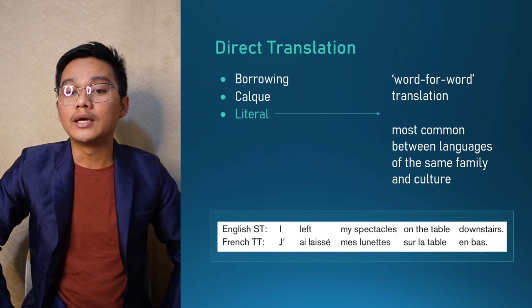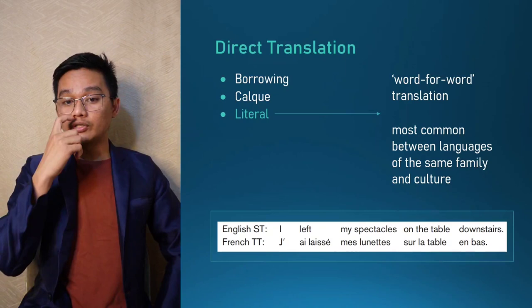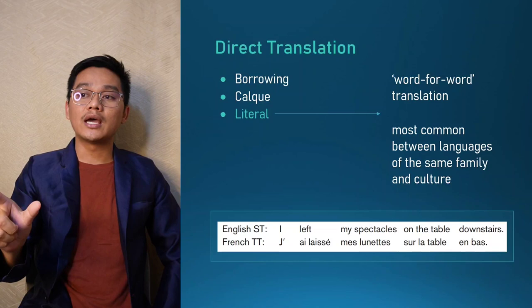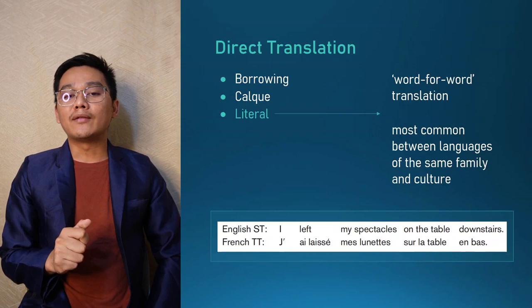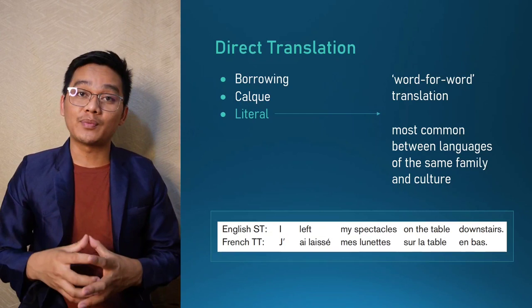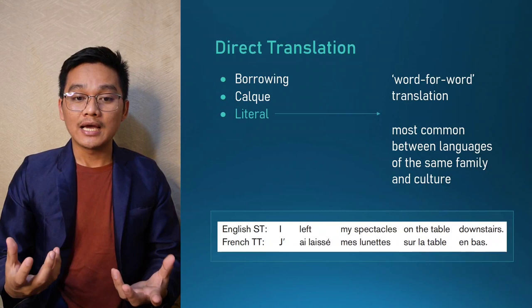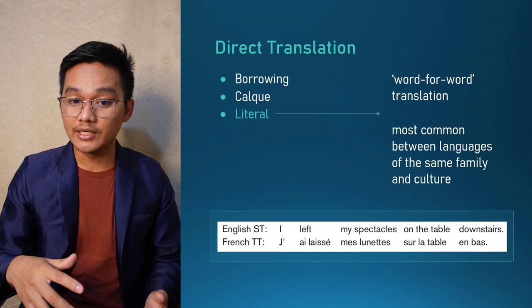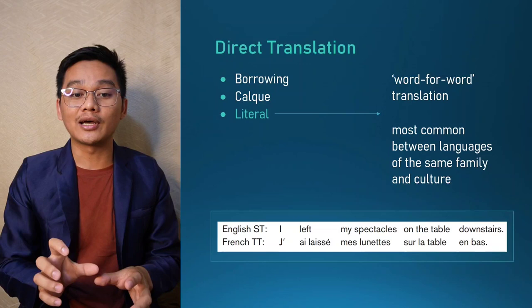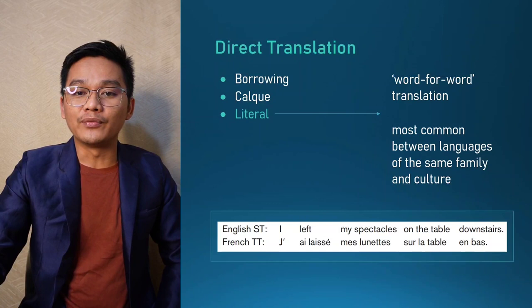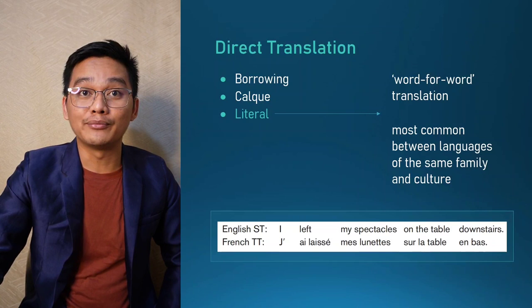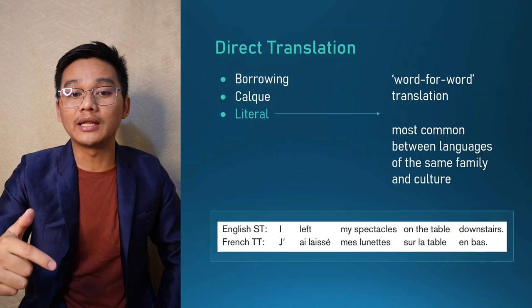The third procedure under direct translation is literal translation — a word-for-word translation. This is most commonly used between languages of the same family and culture. When the source language and target language exhibit a similar linguistic structure, literal translation is often possible. For example, between English and French, the sentence 'I left my spectacles on the table downstairs' has an almost identical corresponding structure in French.